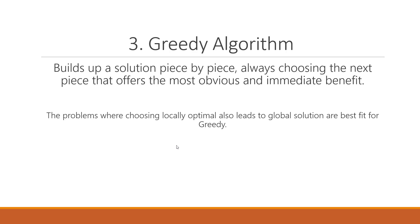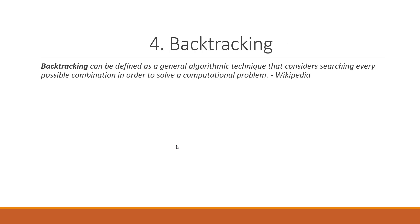The last one is backtracking. Backtracking is best defined by Wikipedia itself. It says backtracking can be defined as a general algorithmic technique that considers searching every possible combination in order to solve the computational problem.